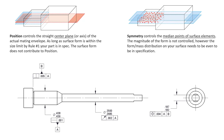On this slide, up here in the top left-hand corner, we've got position. This states: position controls the straight center plane or mid-plane of the actual mating envelope. So, as long as surface form is within the size limit by rule number one for your part, it's in spec. Looking at the 187 to 182, this simply means as long as we're within that size, it will be controlling form as well, or flatness.